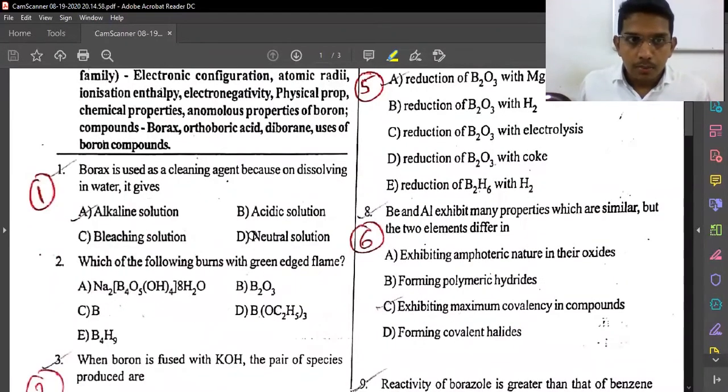For the first question: Borax is used as a cleaning agent because on dissolving in water it gives an alkaline solution. Cleaning agents work in alkaline medium because of the alkaline pH value. Bacteria and microorganisms grow in acidic conditions, so cleaning agents use alkaline medium. Borax on dissolving in water forms an alkaline solution, so it is used to make cleaning agents.